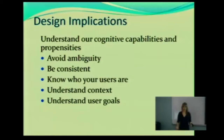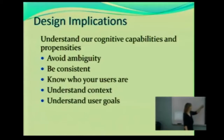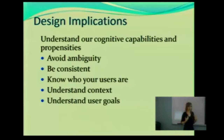What are some of the design implications of all these things? Well, the primary one is we need to understand our cognitive capabilities and our cognitive propensities — that's very important in our design. With a lot of the things we just went through, we need to avoid ambiguity. How do you choose a name for a button? How do you choose names for tabs in a website or navigation? How do you ask your users particular questions? You need to make sure things are not ambiguous, and it's easier said than done.